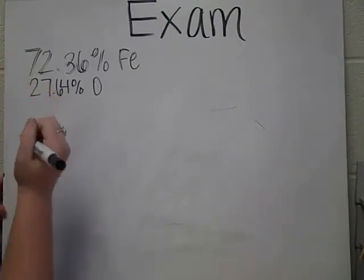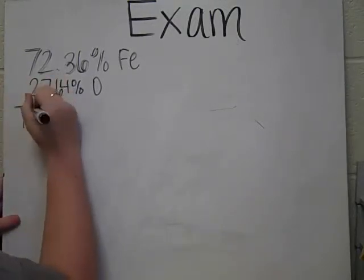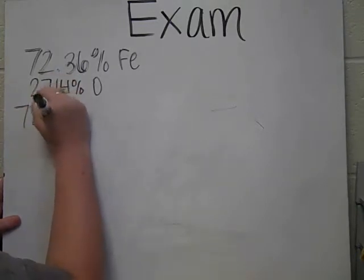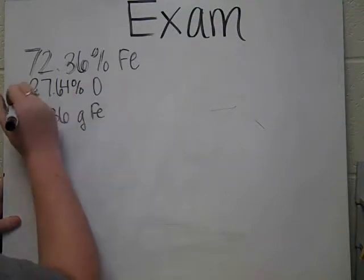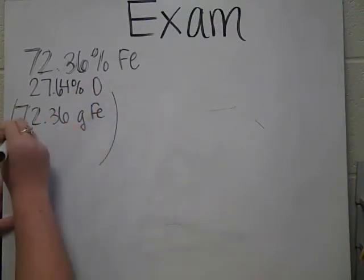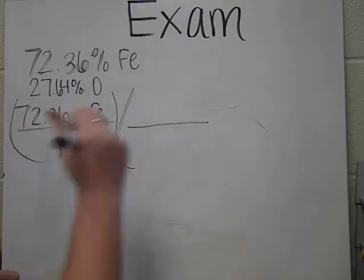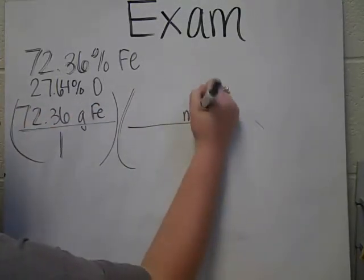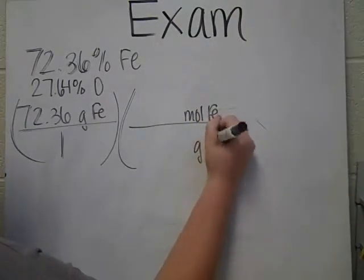Then to find out the formula, we're going to have to figure out how many moles we have. So we're going to figure out how many moles we have for each thing. You pull what you got over one, and then you put what you want over what you got.